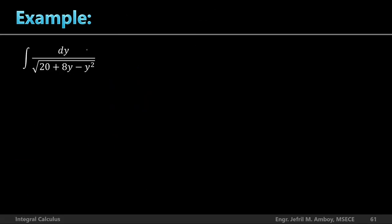Next example has a square root, but there's a squared expression inside it. Since the constant term comes first inside the square root, the result will be inverse sine. The denominator expression is 20 + 8y − y², which requires completing the square.